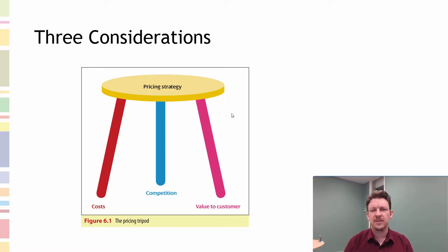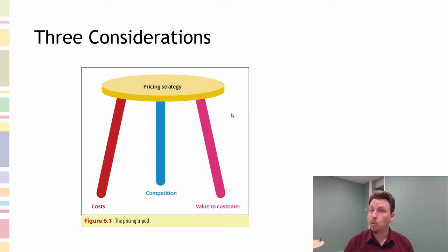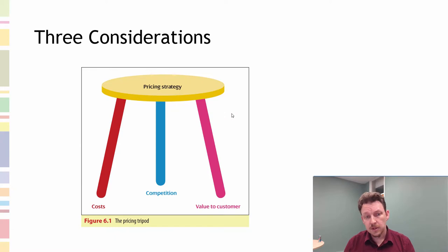Pricing strategy has three legs: costs, competition, and value. There's a diagram here — I'll be honest, I included it partly because the authors managed to get a chair into the diagram. The game is on to find where the bear is and where the people with games are. But let's kick off with the discussion of cost.